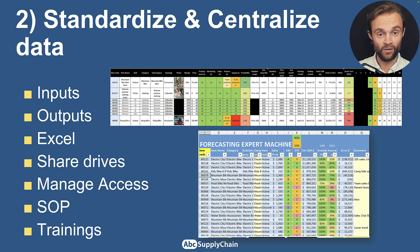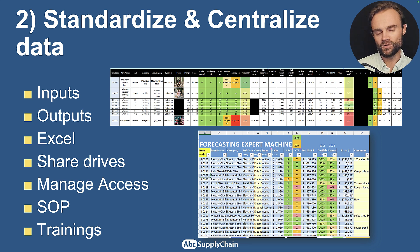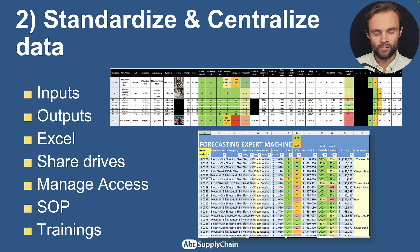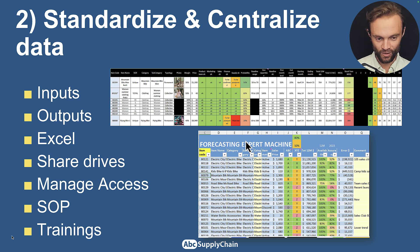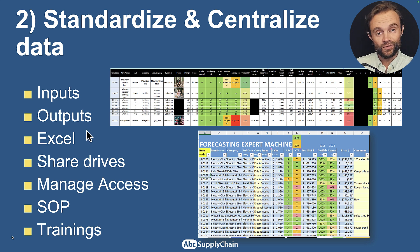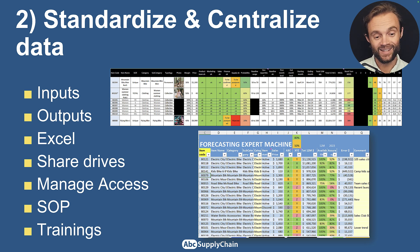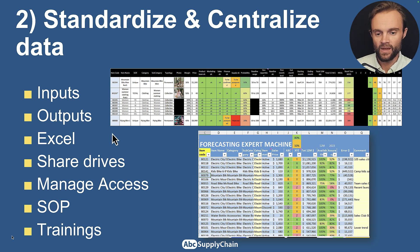Step two: standardize and centralize all data related to new products. Most of the time it's a mess — Excel files, emails, everyone using a different spreadsheet or tool with a different style for cost, price, and product information. When I became supply chain manager or S&OP manager, the first thing I did was define one template, one simple Excel. I share an example in my Forecasting Expert course — a very simple template with pictures, all the information and formulas needed. Everyone uses the same template in a shared drive, and we train every new person joining the company.